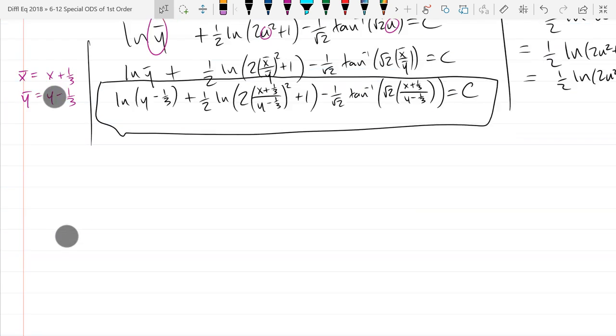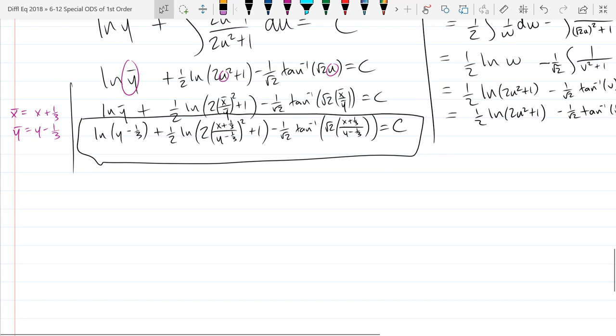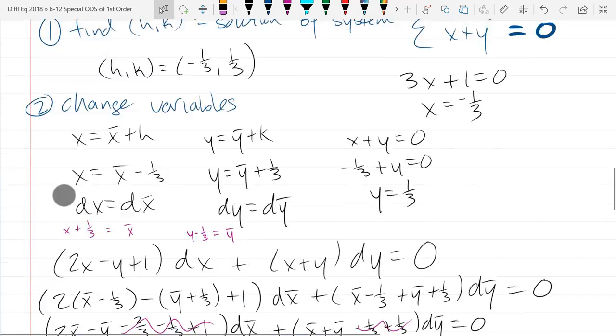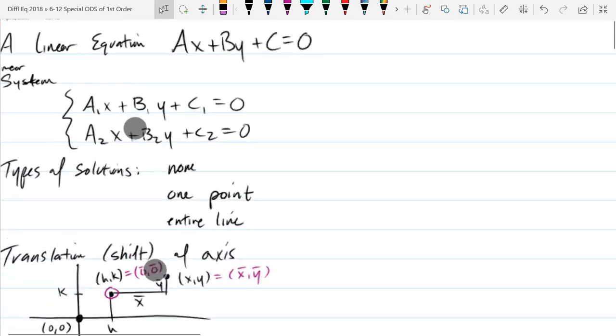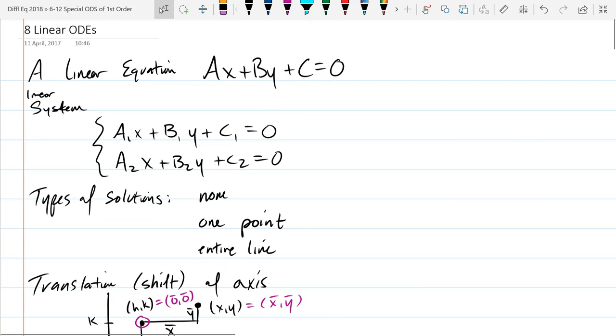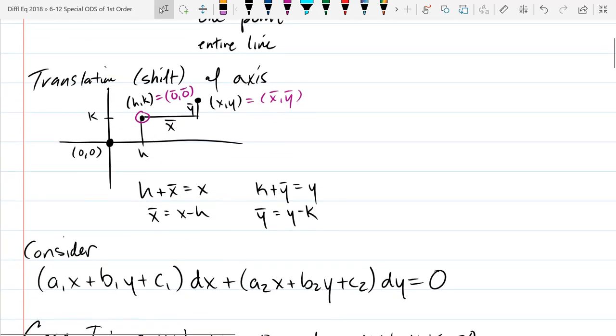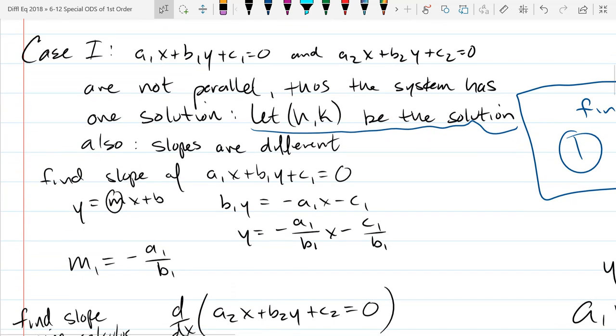So now we're going to do another example, and these are going to be parallel lines. So we're not going to have a single point solution. This was case one where we had not parallel, so we had this single hk. So now we're going to have parallel. These lines are not going to intersect at one point.